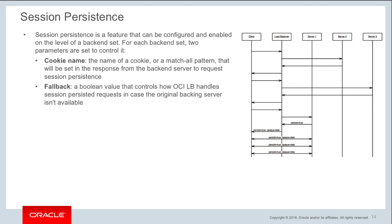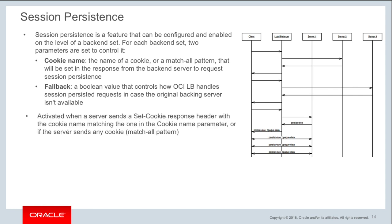Fallback is a value that controls how the OCI load balancer handles session persistence requests in case the original backend server is no longer available. The load balancing service activates session persistence when a backend server sends a set-cookie response header containing a recognized cookie name. The cookie name must match the name specified in the backend set configuration, and if the configuration specifies a match-all pattern, then any cookie set by the service activates session persistence. Unless a backend server activates session persistence, the service follows the load balancing policy specified when you created the load balancer.